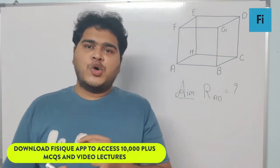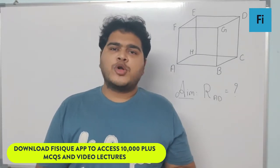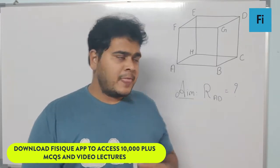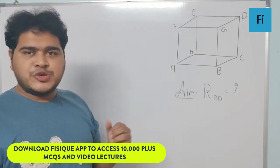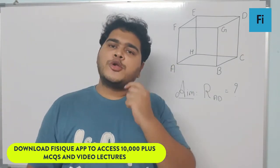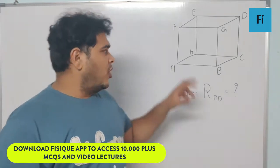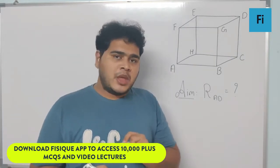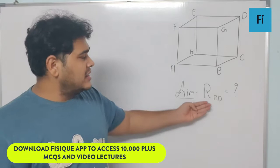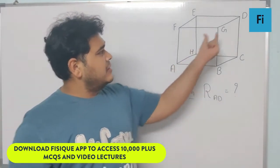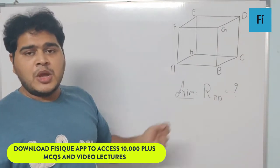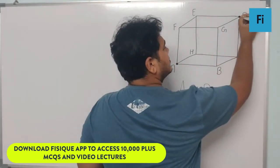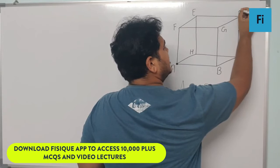Let's find the resistance across the body diagonal of a cube. In this cube arrangement, all edges have the same resistance R. Our aim is to find the resistance between point A and point D, which is the body diagonal of the cube.